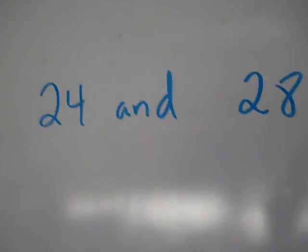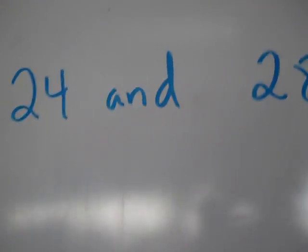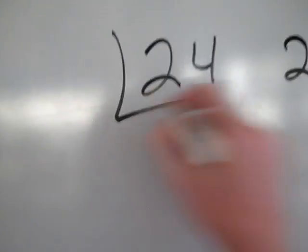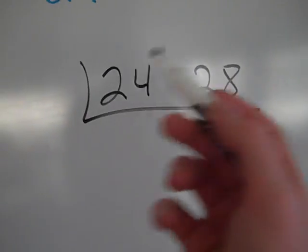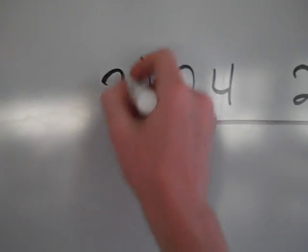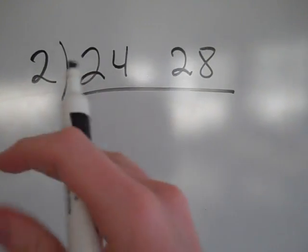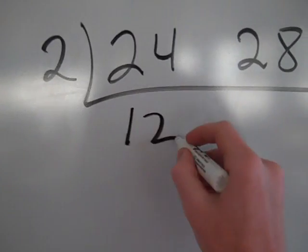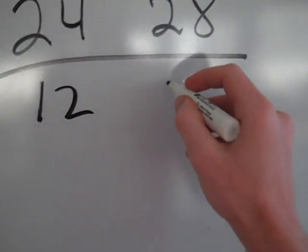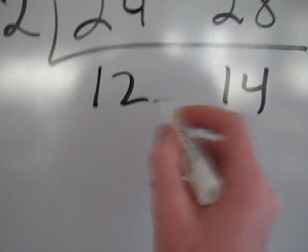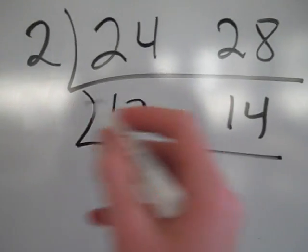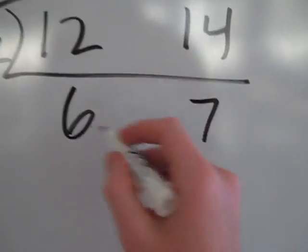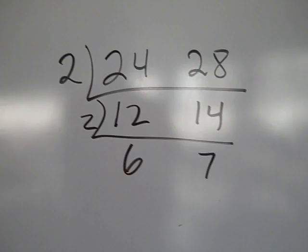So here, I have 24 and 28. I'm going to throw them in my division ladder or factor ladder. I look at these two numbers and I say they're both even. Now, if you know bigger numbers to factor out, you can. I'm just going low to show you a point. So 2 goes into 24 twelve times and 2 goes into 28 fourteen times. Those are still even. Then I can go 2 again, that's 6 and 7. And 6 and 7 don't have any common factors.